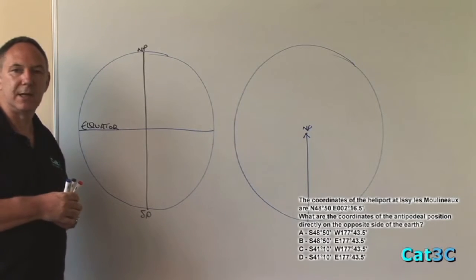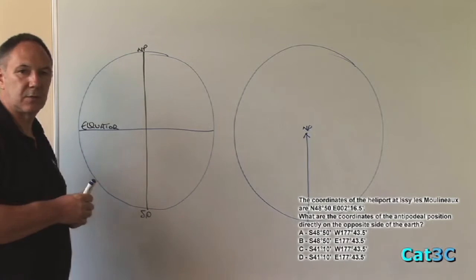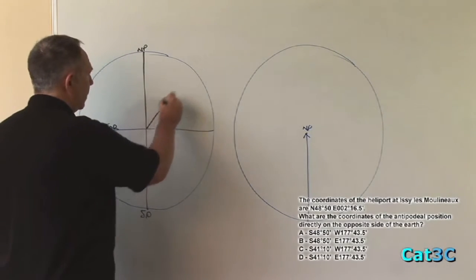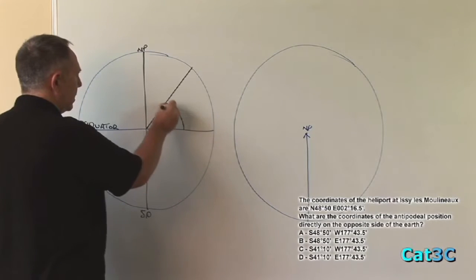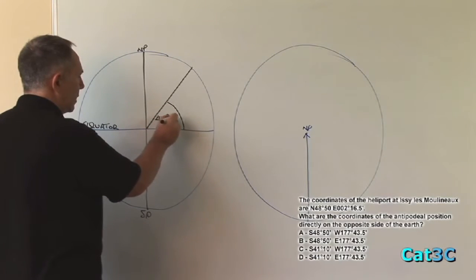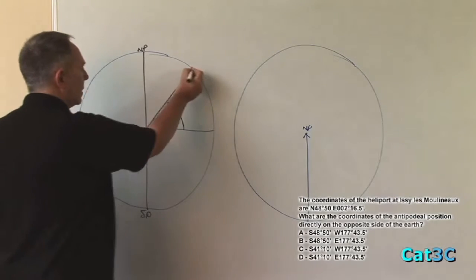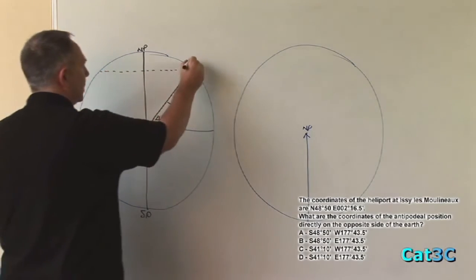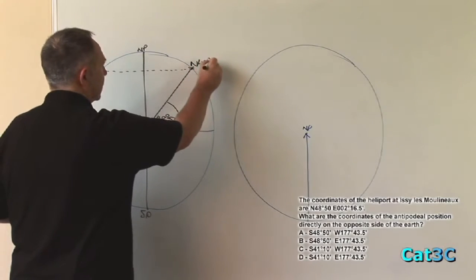Now the latitude of EC Le Moulinot is north 48 degrees 50 minutes. A latitude is taken from the angle at the plane of the equator. So that angle there is 48 degrees and 50 minutes. This position, which relates to this line of latitude, is at north 48 degrees 50 minutes.